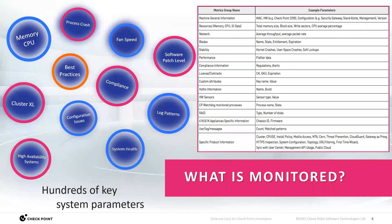Let's talk about what we can monitor with ProSupport. Today, we have hundreds of indicators and subsets of indicators picking up on alerts and faults. The parameters we're monitoring are a large range, but you can expect to see alerts related to cluster XL stats, logging patterns, process crashes, kernel crashes, overall system health, memory throughput, and CPU stats. On the screen you can see a basic example of our metric groups and example parameters we're using with ProSupport today.